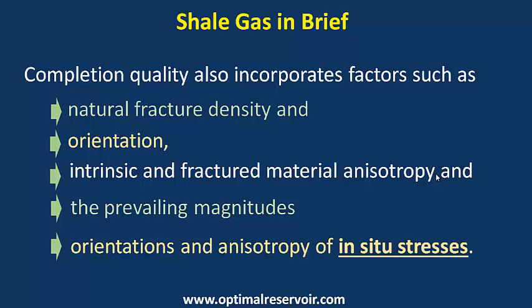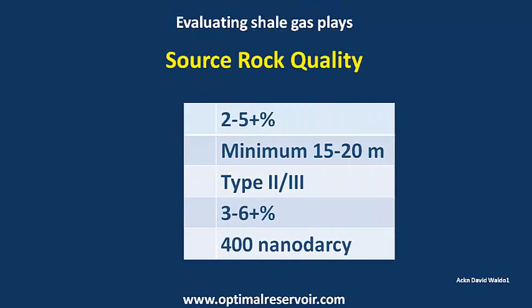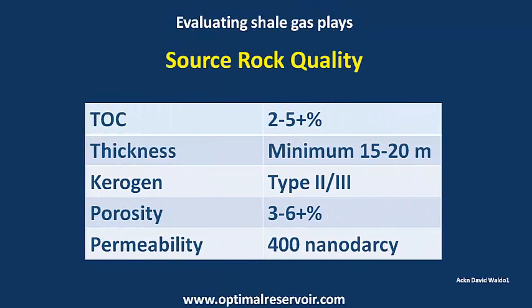Also considered are the prevailing magnitude, orientation, and anisotropy of in-situ stresses. To evaluate shale gas plays, first assess source rock quality: total organic content (TOC) should be between 2 to 5% and up; thickness minimum 15 to 20 meters; kerogen type 2 or type 3; porosity 3 to 6% and up; permeability 400 nano-Darcy and up.